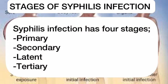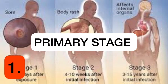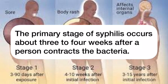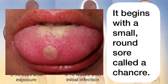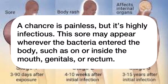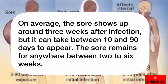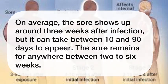Syphilis has four stages of infection: the primary stage, the secondary stage, the latent, and the tertiary stage. The primary stage of syphilis occurs about three to four weeks after a person contracts the bacteria. It begins with a small round sore called a chancre. A chancre is painless but highly infectious. This sore may appear wherever the bacteria enter the body, such as on or inside the mouth, genitals, or rectum. The sore can take between 10 and 90 days to appear and remains for anywhere between two to six weeks.